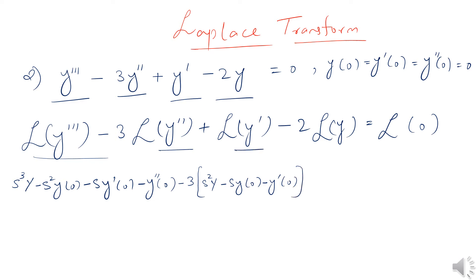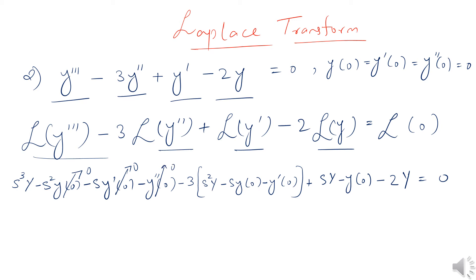Then the Laplace transform of y prime is sY minus y(0), and the Laplace transform of y is capital Y, while the Laplace transform of 0 is 0. Since y(0), y prime(0), and y double prime(0) are all equal to 0, all those initial condition terms vanish.